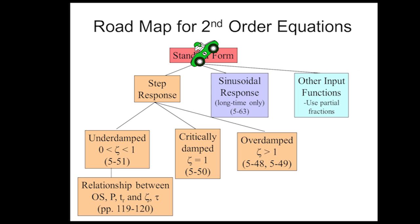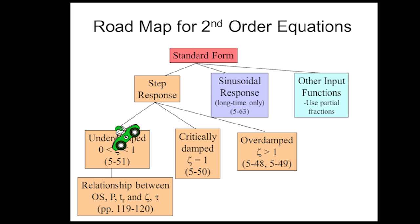What we do is we first put it into standard form, then we decide what type of input we're going to have — whether a step response, a sinusoidal response, or other input functions. I'm going to go down the step response route, and let's say we have an underdamped system. Underdamped systems have oscillation and some overshoot, and they approach the new steady state value faster than critically damped or overdamped systems.